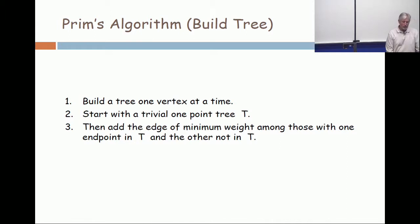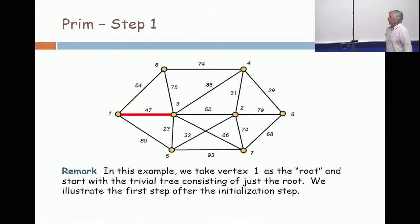All right. Let's implement Prim's algorithm. I'm going to start. It's going to be on the same picture. I'm going to take root node as one. So my initial step, which I haven't pictured, is to say that my first tree is the one point tree consisting of node one, vertex one.